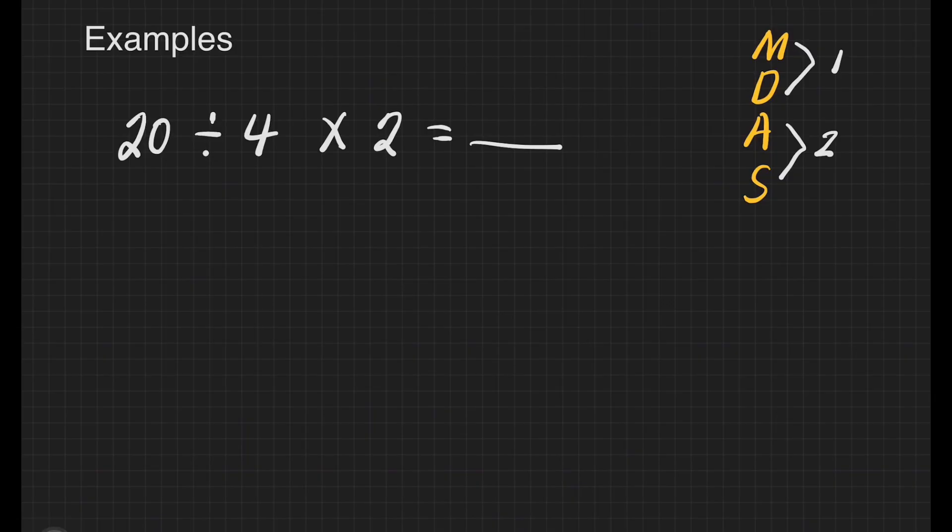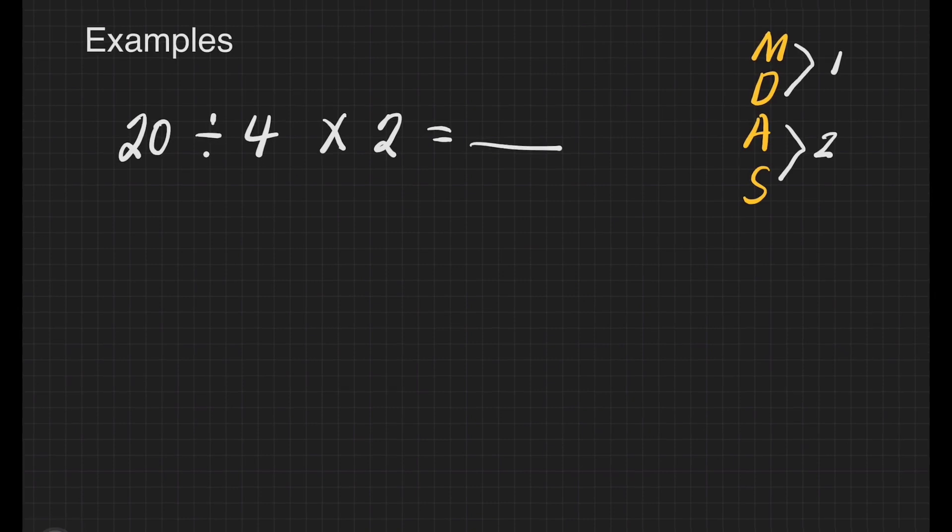Example here: 20 divided by 4 times 2 equals blank. I already placed our guide on the right side of the screen so that we remember we have to do multiplication or division, whichever comes first, and then addition and subtraction, whichever comes first.